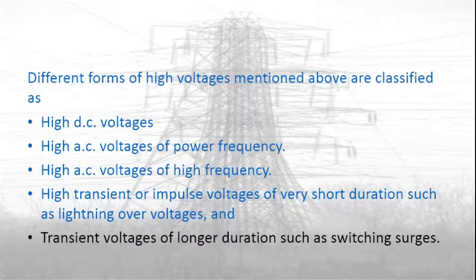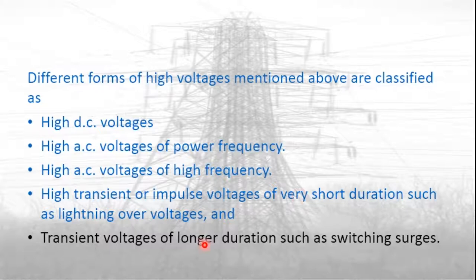For AC, we have two categories: power frequency and high frequency. For impulse voltages, we have short duration and long duration. Short duration is associated with lightning and long duration is associated with switching surges.